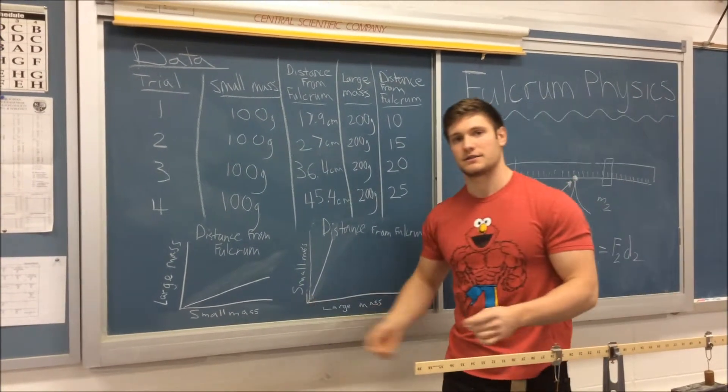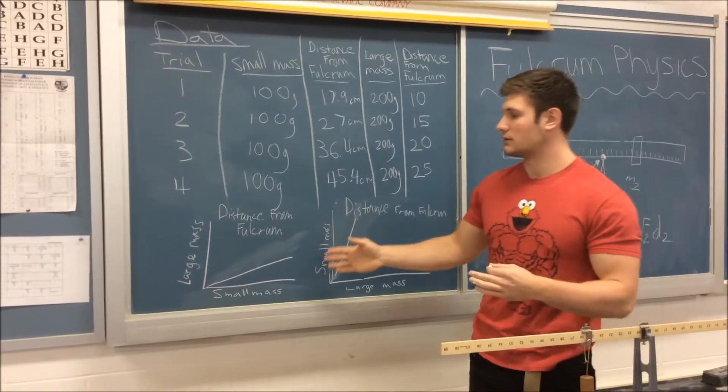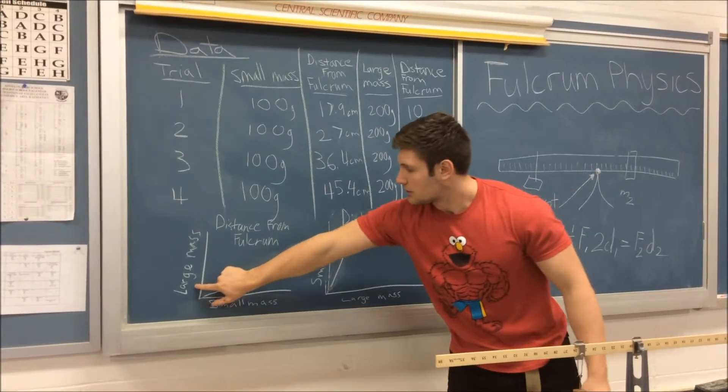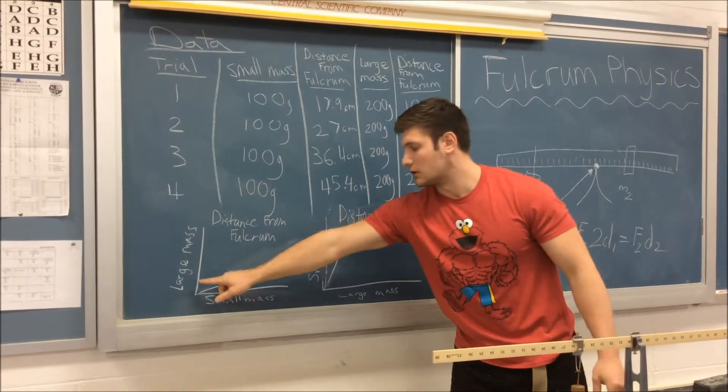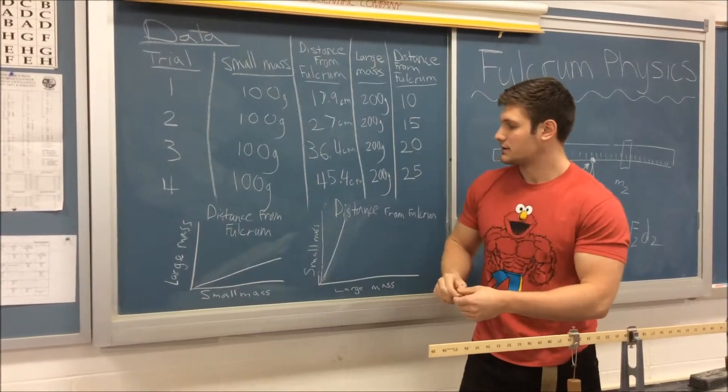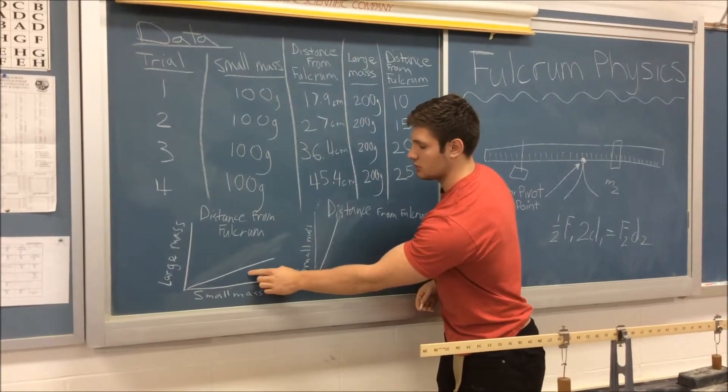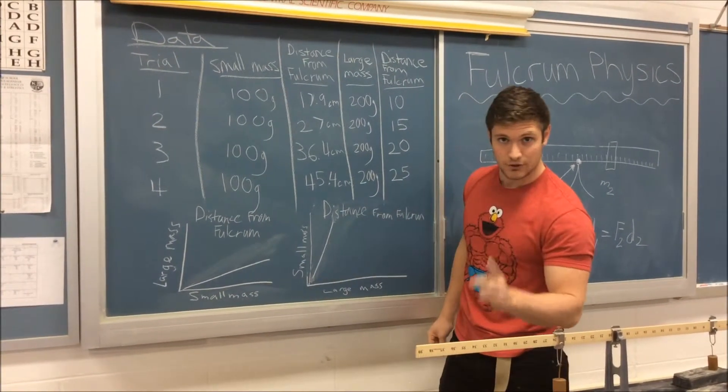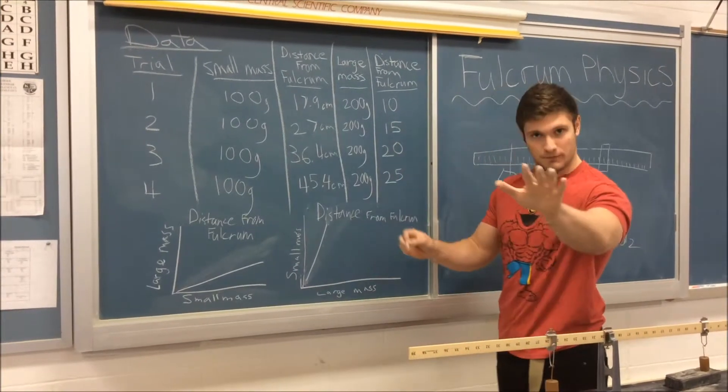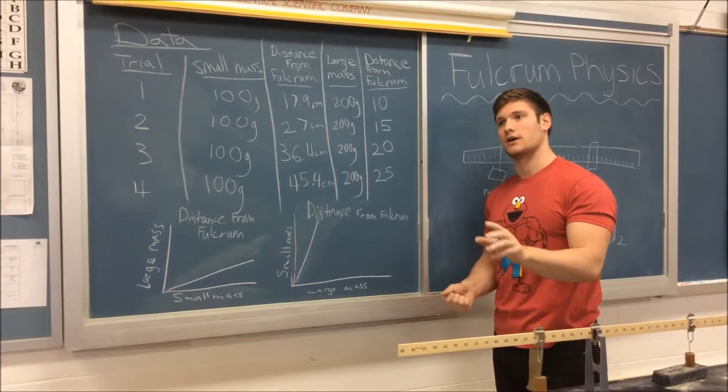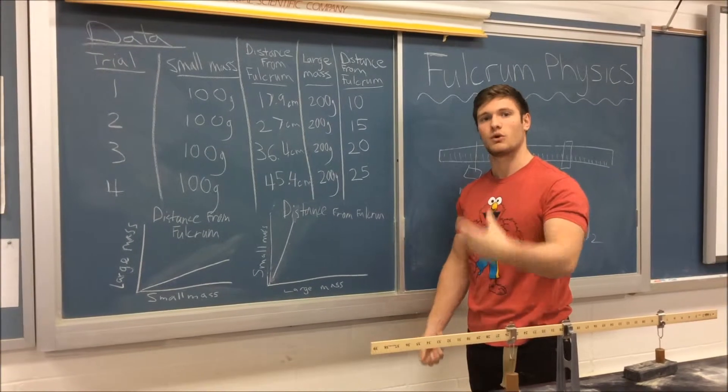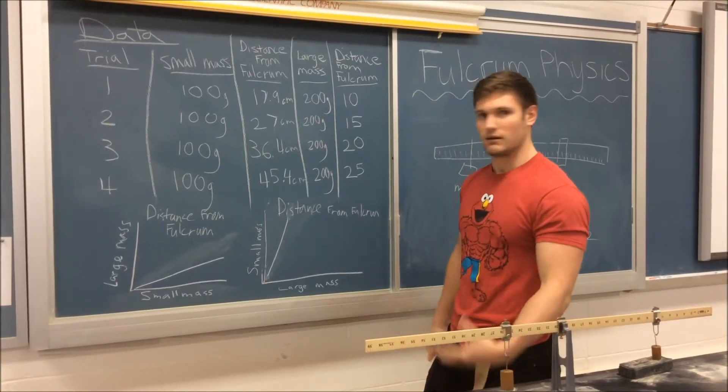So then you get to the graphs, and you can understand from analyzing the graphs, you'll see the distance from the fulcrum of the large mass is always half the distance of the small mass, where you'll see the slope of your linear graph, which it is a linear relationship, will be one half, if and only if the mass of the larger mass is twice the mass of the small mass.